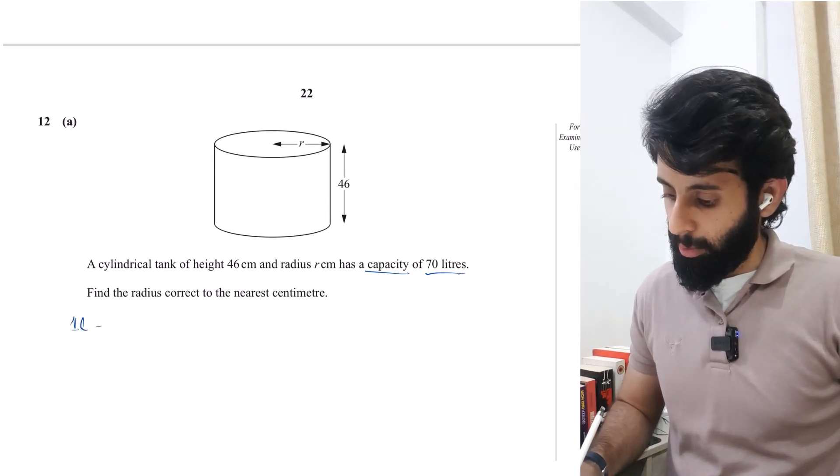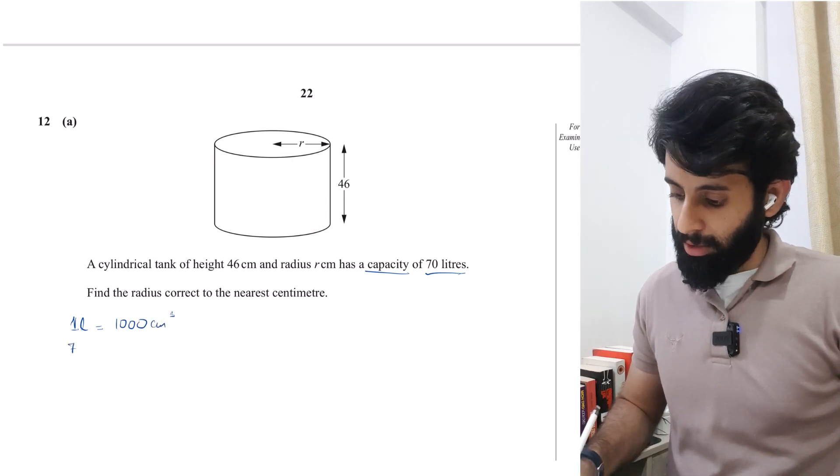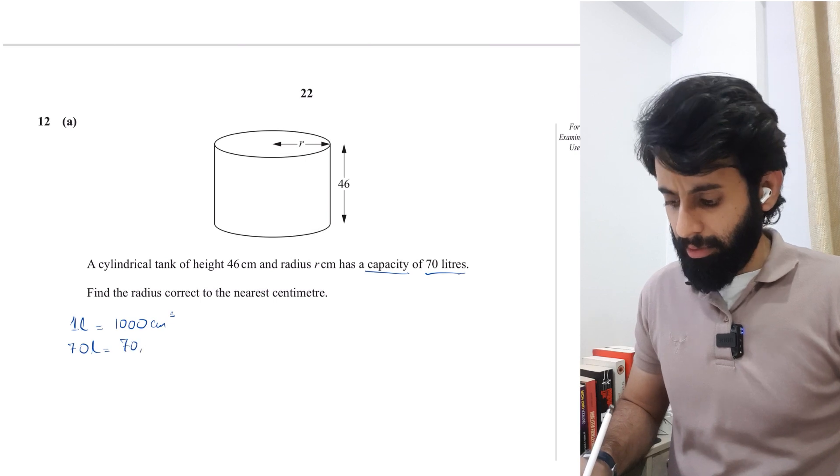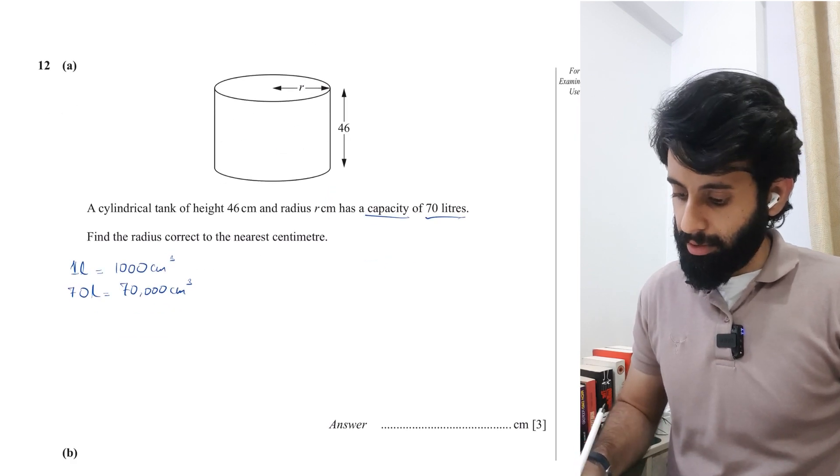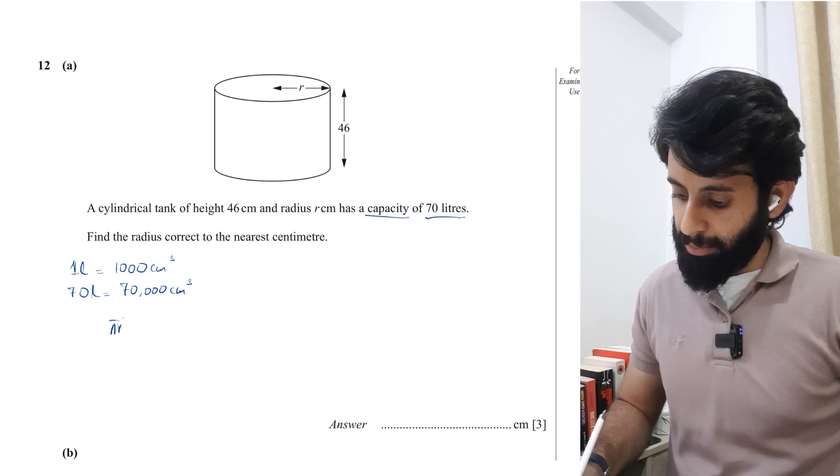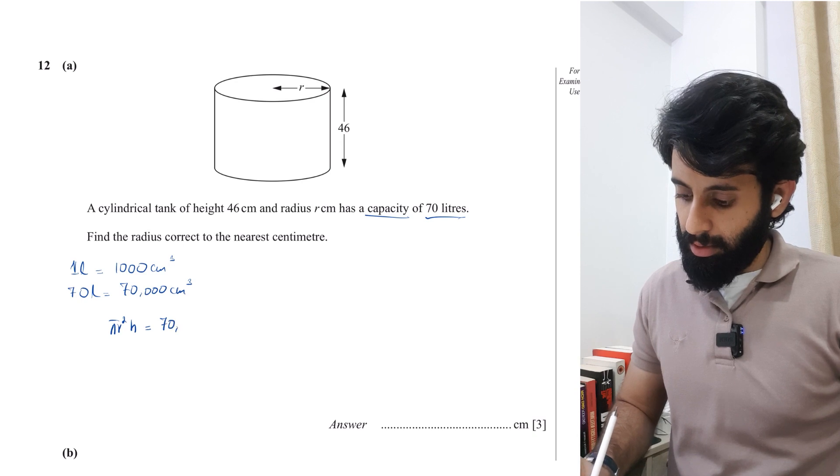This shouldn't be a problem because you should know how to convert liters to centimeter cube. You should remember that 1 liter equals 1000 centimeter cube, which basically means that 70 liters is going to equal 70,000 centimeter cube. So volume of a cylinder is πr²h. This equals 70,000.